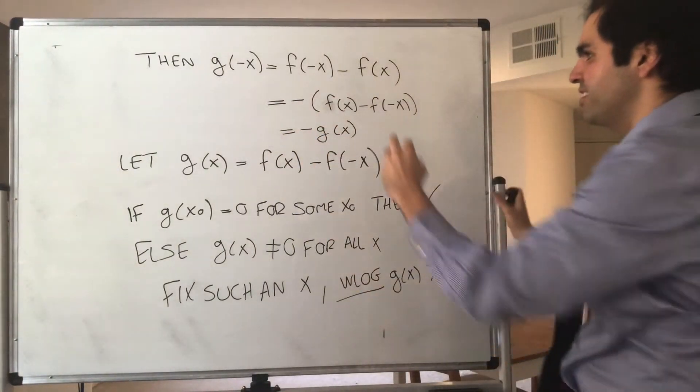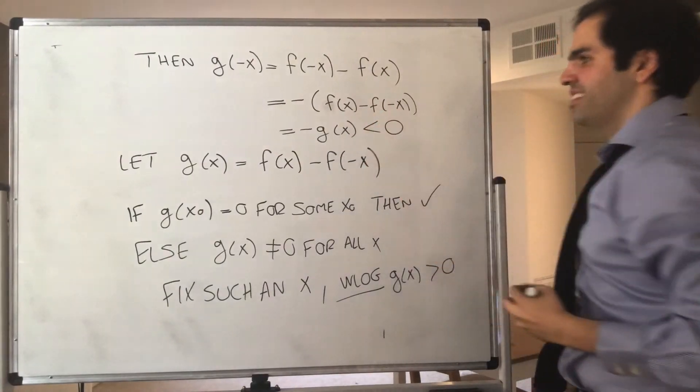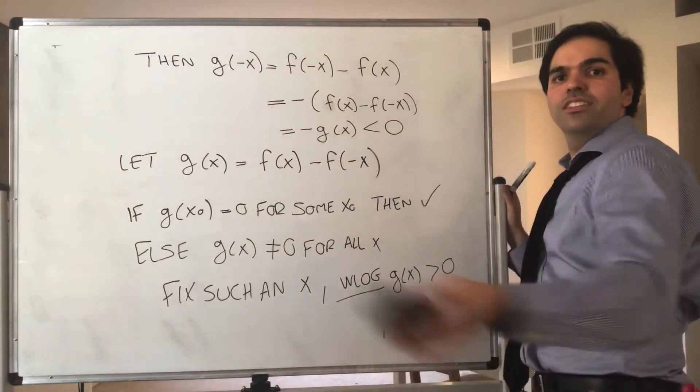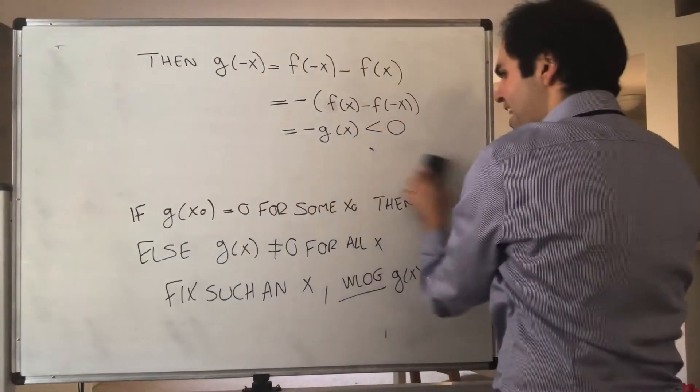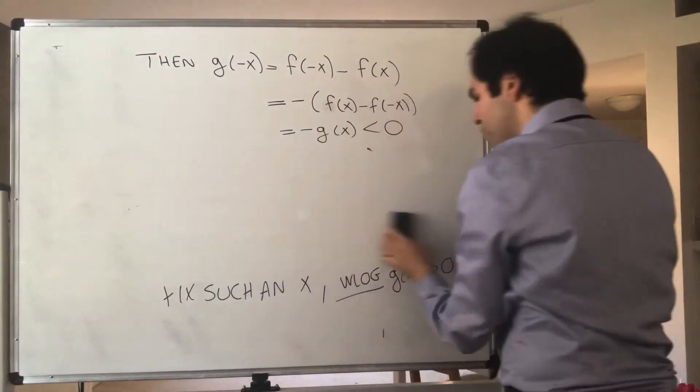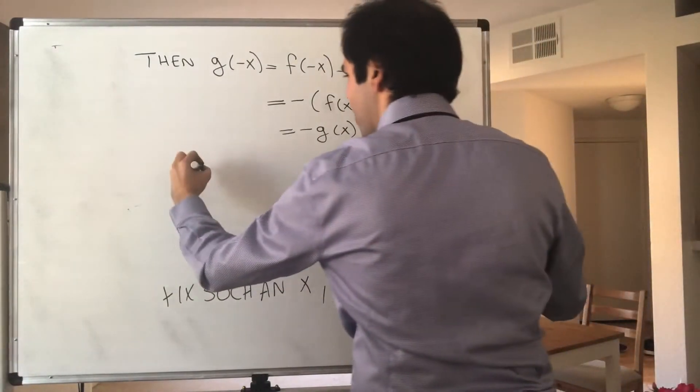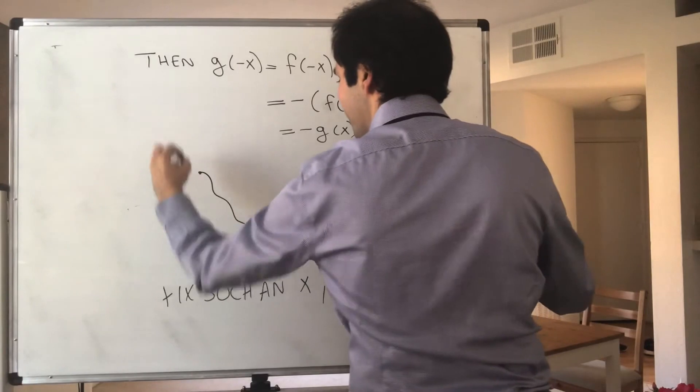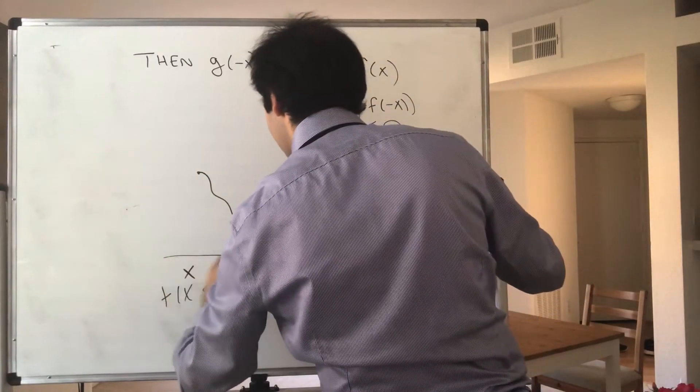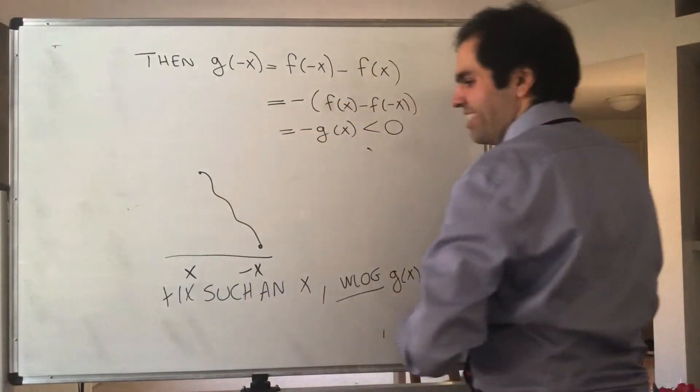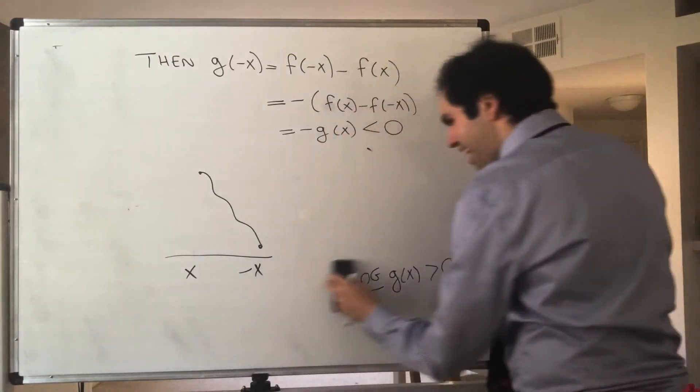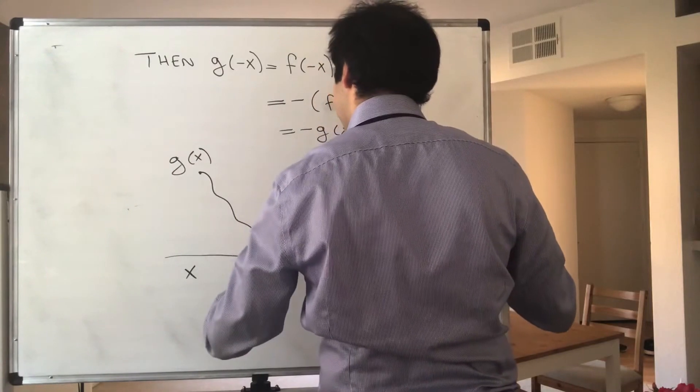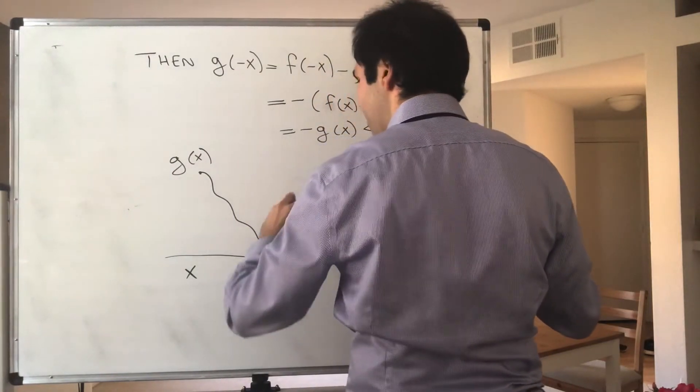But we know g(x) is positive, so minus g(x) is negative. So what does this function look like? Well, it's continuous because f is. And it goes from positive values to negative values. So if this is x and this is minus x for some reason, let's say x is negative in this case, then g goes from positive values to negative values.